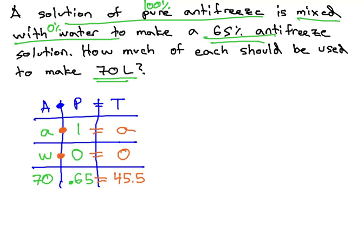As we have two variables, we need two equations to solve this problem. This comes from the first column, a plus w equals 70 for our total amount of solution, and the last column, a plus 0, or just a, equals 45.5.